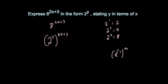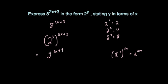If you've got a power of a power you multiply the powers together. So we're going to multiply these powers together: 3 times 2x is 6x, and 3 times 3 is 9. So 8 to the power of 2x plus 3 equals 2 to the power of 6x plus 9.